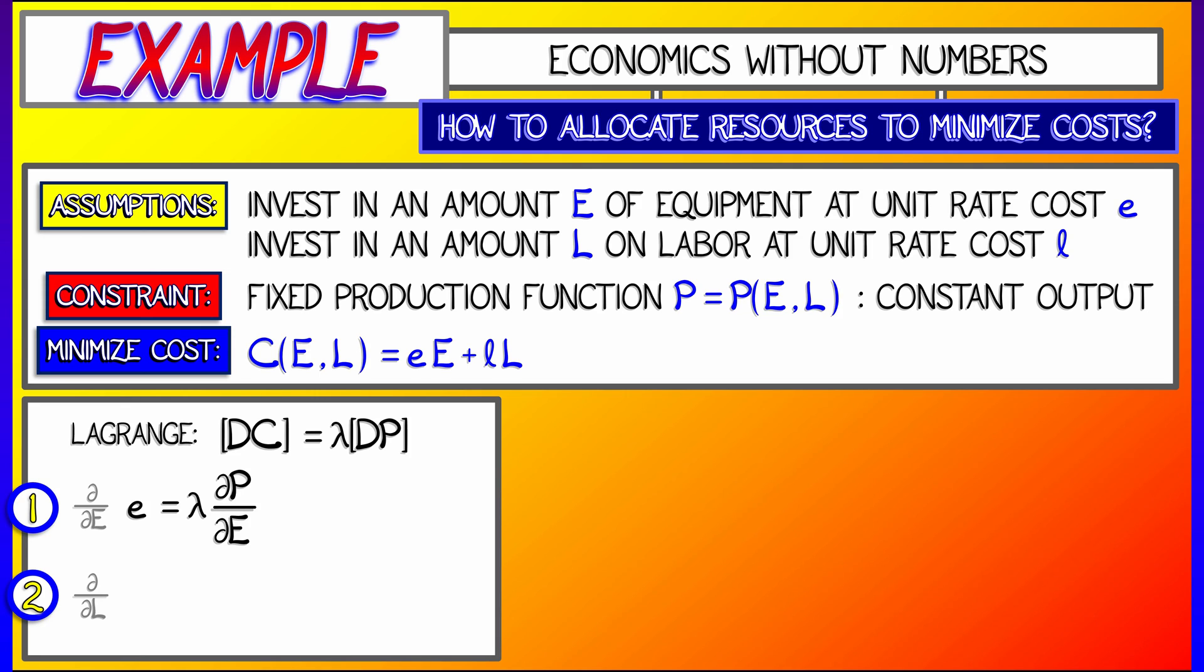Now, do the same thing with respect to big L. And what I will get is on the left, little l, the labor cost rate, equals lambda times partial big P partial big L.